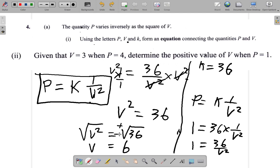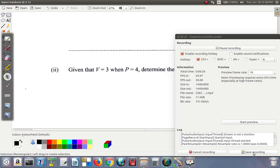I could have written plus or minus the square root of 36 here. Because there are two of them. But we're interested in the positive 6. So V is equal to 6. That's it for question 4A2. Thank you.